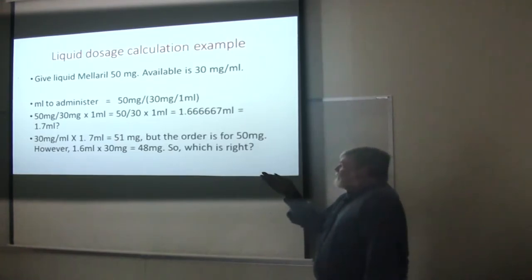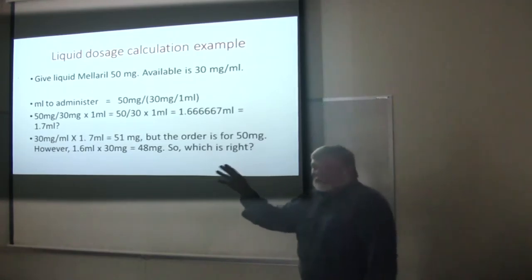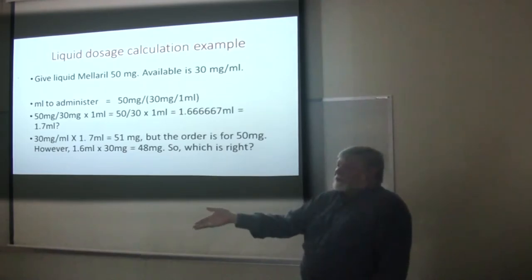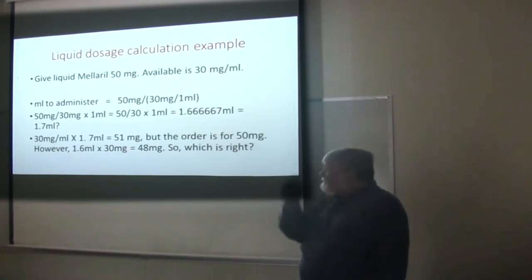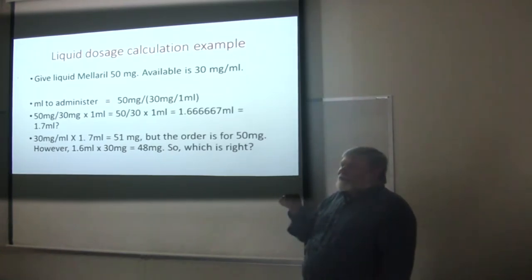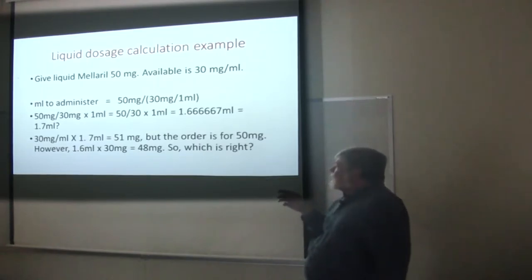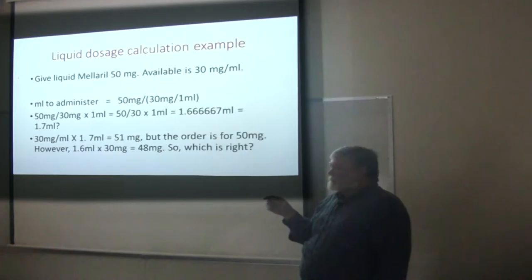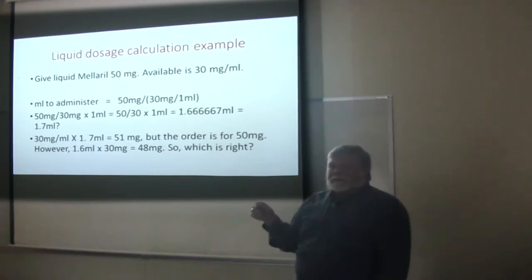When you get your answer, multiply it back into the original equation to make sure it comes out with a number that makes sense. So if you have 30 milligrams per mL and you multiply 30 times 1.7, what do you get? 51. Was the order for 51 milligrams? No.